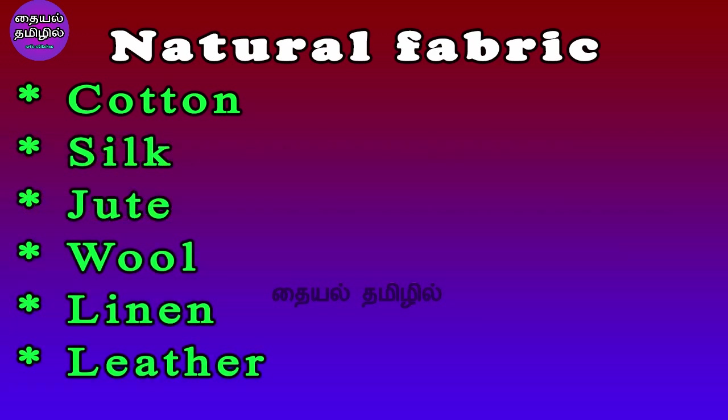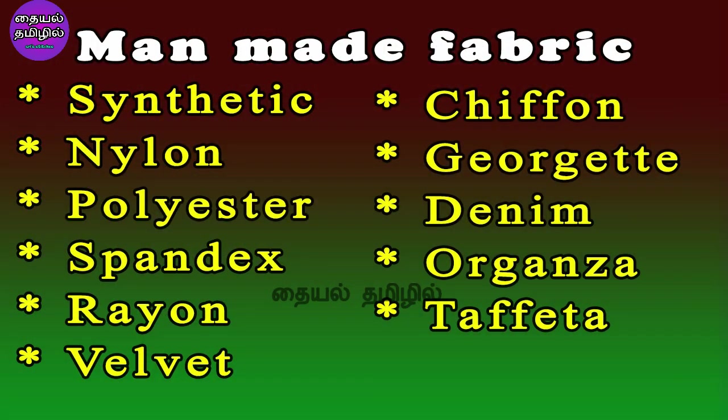Natural fibers include cotton, silk, jute, wool, linen, and leather. Man-made or synthetic fibers include nylon, polyester, spandex, rayon, velvet, chiffon, georgette, denim, organza, taffeta, and more. There are many material names across both categories.